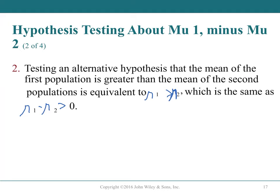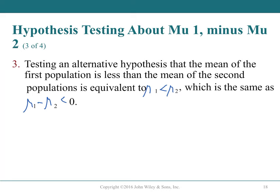A catalog of hypothesis forms: if the first population mean is greater than the second, H_A is μ₁ > μ₂ or μ₁ - μ₂ > 0 (right tail). If less, H_A is μ₁ < μ₂ or μ₁ - μ₂ < 0 (left tail, negative difference). Both notations are acceptable; the second is more directly graphable.